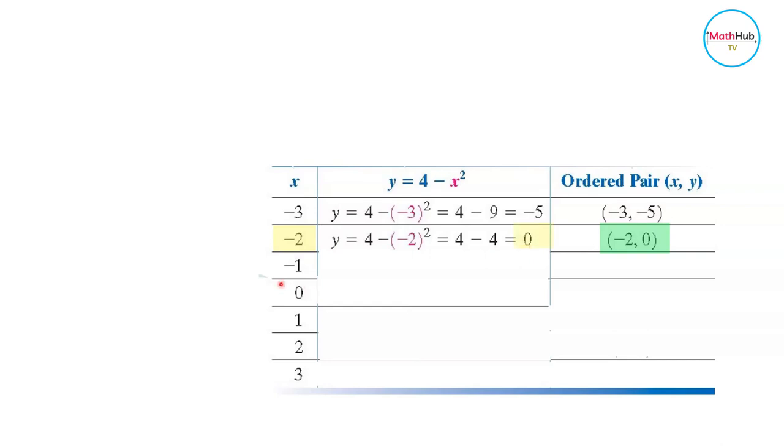Similarly, if you do the same thing, you use these as your x values and plug them into the expression. You evaluate the expression using those values of x. So you have 4 minus negative 1 squared, which is 4 minus 1 because negative 1 squared is 1. That equals 3. So the ordered pair is negative 1, 3.